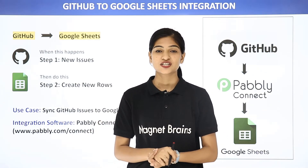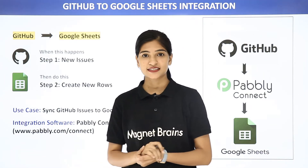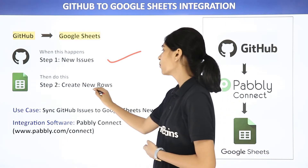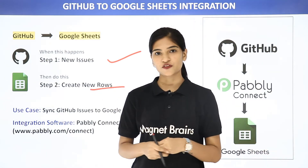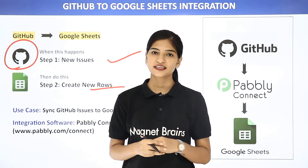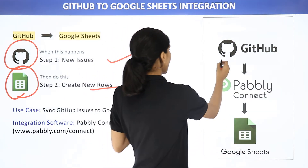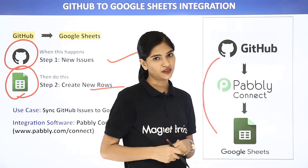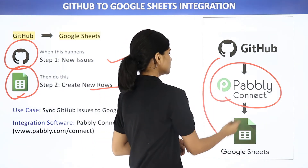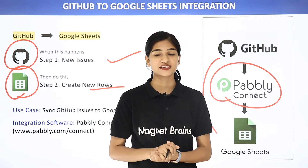Hello everyone, welcome to Pabbly Connect. Today in this video, we are going to integrate two software applications — GitHub and Google Sheets. The use case is: whenever there is a new issue in GitHub, we want the information to go and get stored in Google Sheets in the form of new rows. GitHub is an open source platform where programmers and developers come together and create projects, whereas Google Sheets is an online spreadsheet program. The problem is that GitHub and Google Sheets don't have any integration between them, and that is why we are going to use Pabbly Connect, a third party application software, which is going to help us integrate both. The best part is you don't require any knowledge of coding. So let me show you all this on my screen.